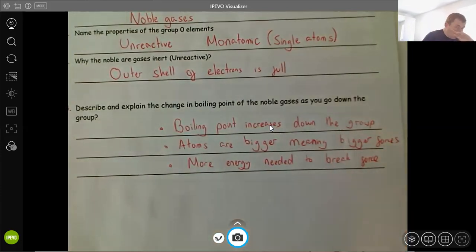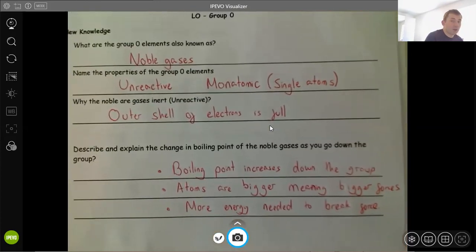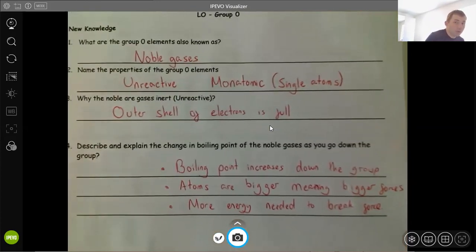So there are your four questions you need to know for this lesson. I'll go through them again. Group zero and noble gases. They are unreactive and they are monotonic. They are unreactive because they've got a full outer shell. And in question four, their boiling point increases as you go down the group because the atoms are bigger, meaning they've got bigger forces, which therefore means more energy needed to break the forces. That's what you need to know for group zero. And take a couple of minutes now. Just make sure you've learnt them. Embed the big origin card if you want to.